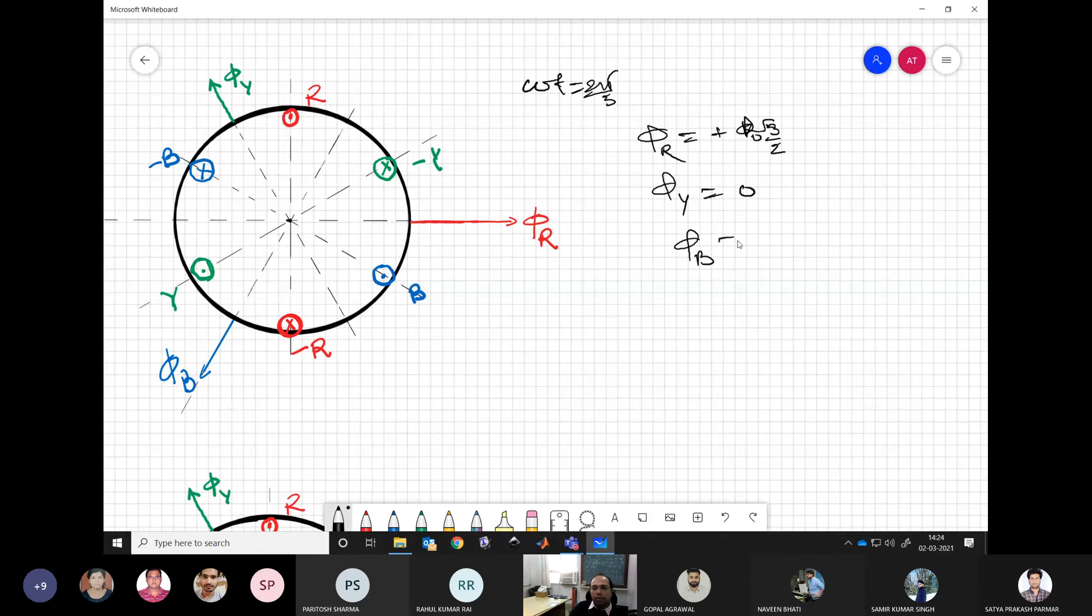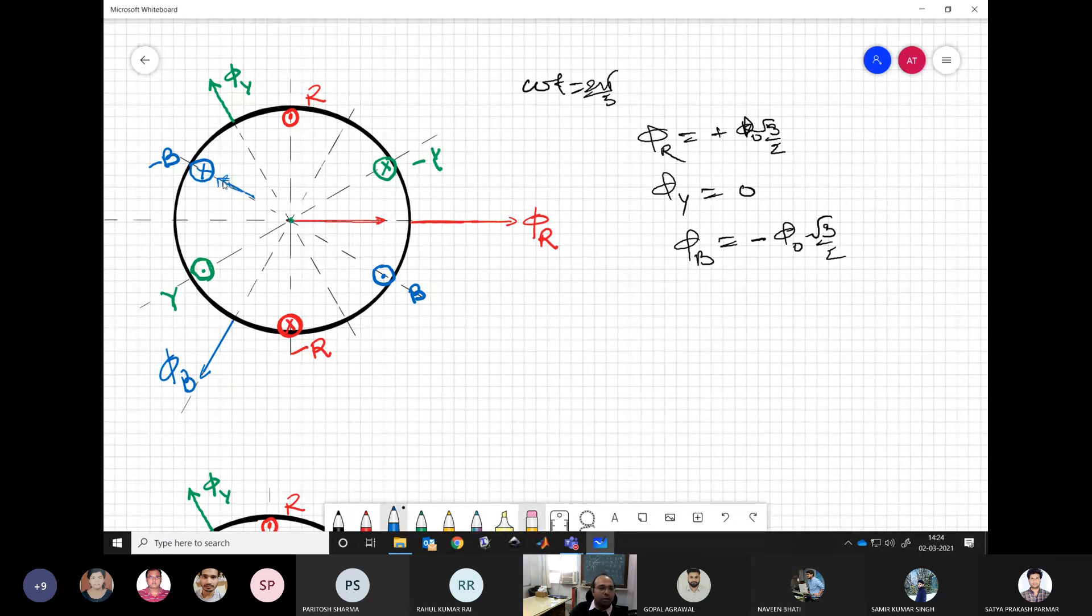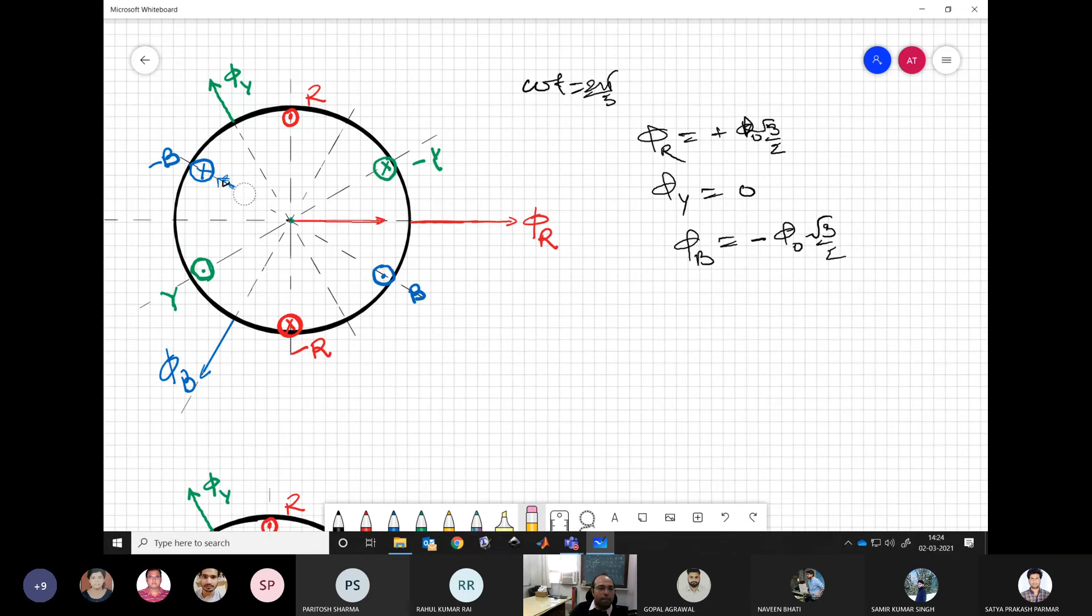Again, if you mark, the phi r is root 3 by 2, something like here. The y is 0, of course, so it is at the origin here. The b is along the negative b axis, so which is coming over here. Sorry, this is the wrong line. Yes, so it should come here.